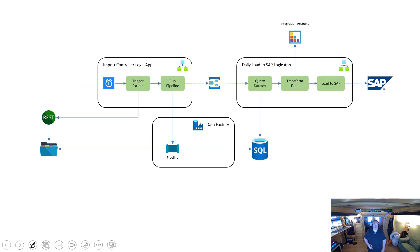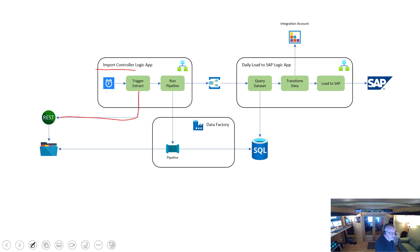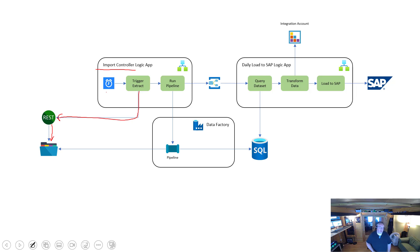Now let's look at using these two technologies together. In this combined scenario, a Logic App runs on a daily schedule and calls out to an external application with an API to trigger an extract. This is a common scenario — you trigger the API and it writes data on demand into an SFTP location. Let's say it's a large data set: 150,000 or 500,000 records. You're not going to pull that back directly via a paged API — you'd be pulling a big extract data file.